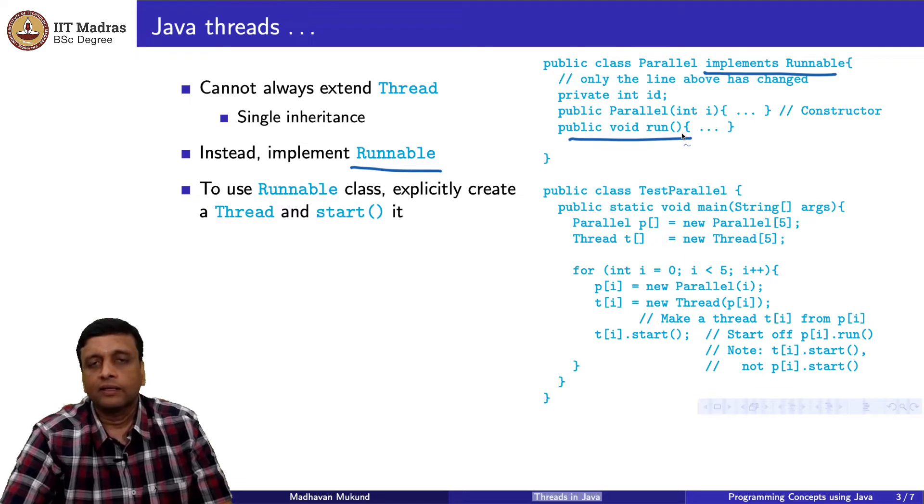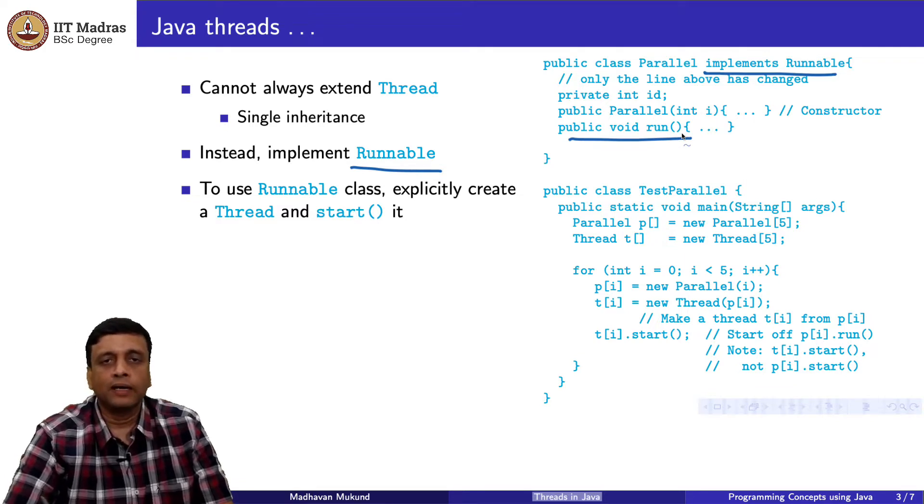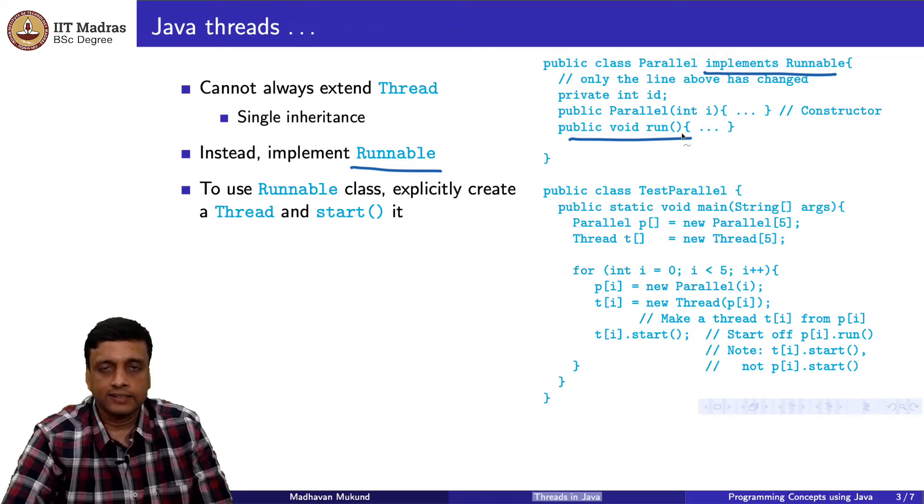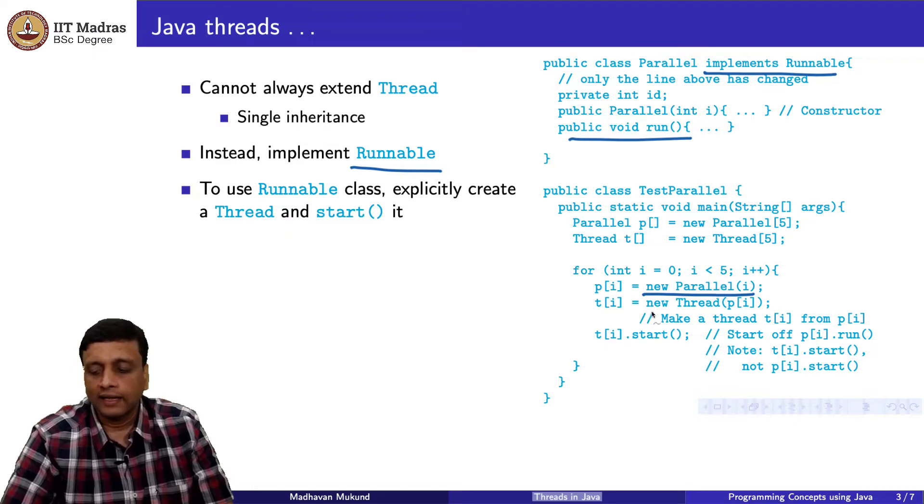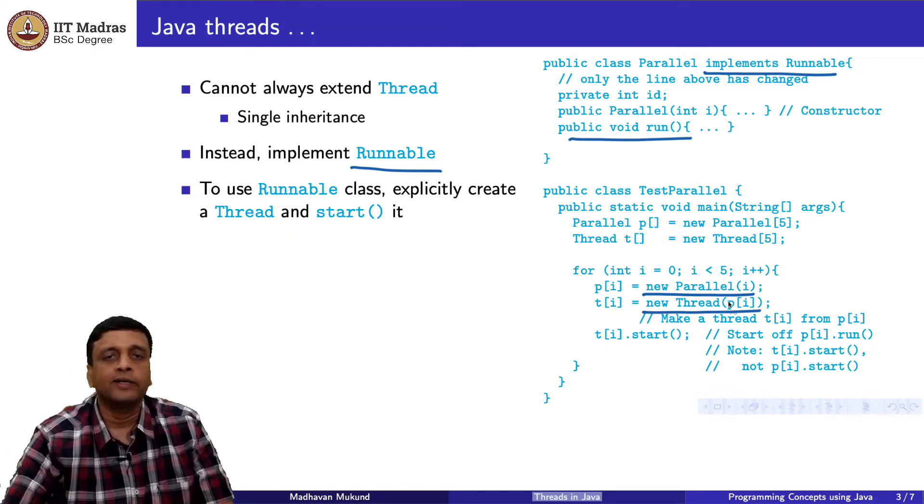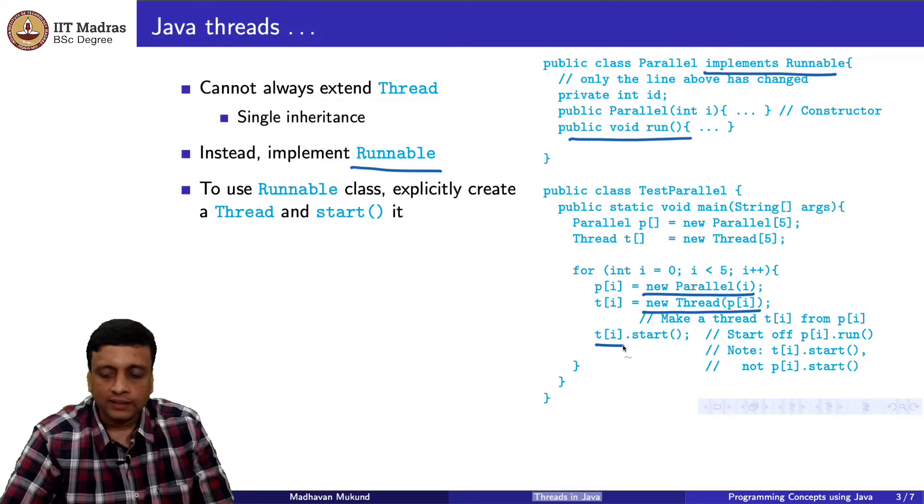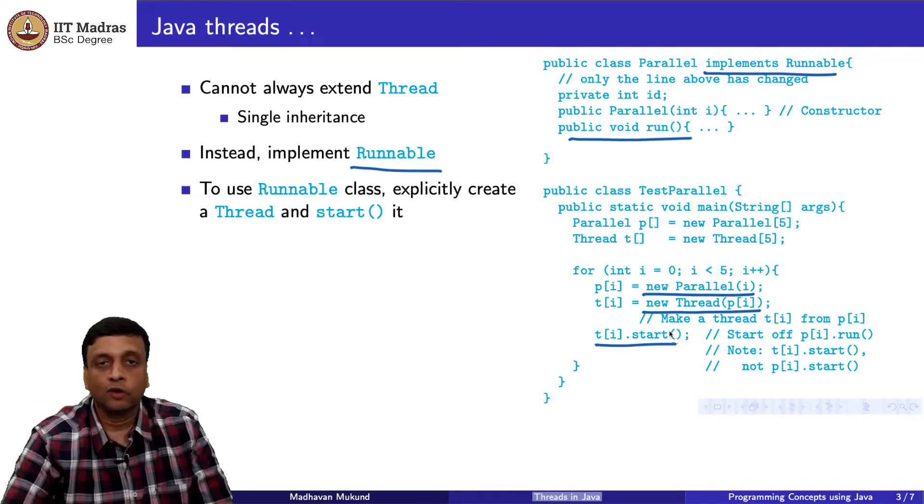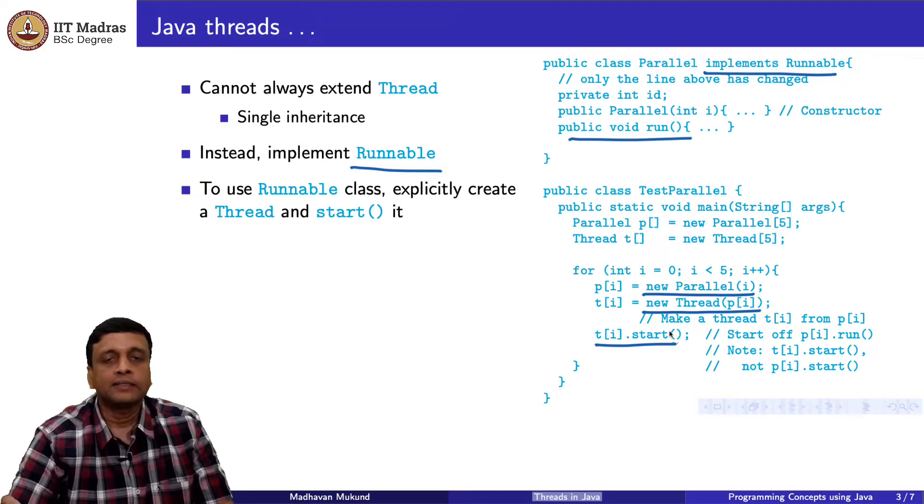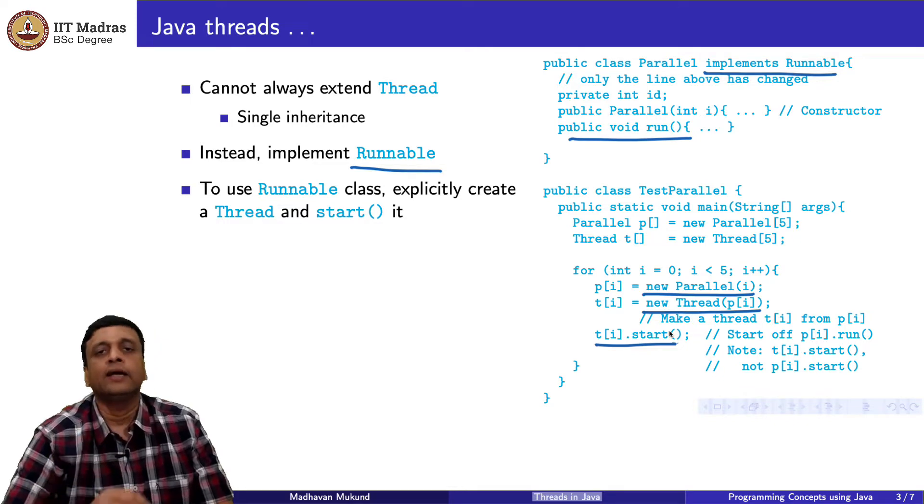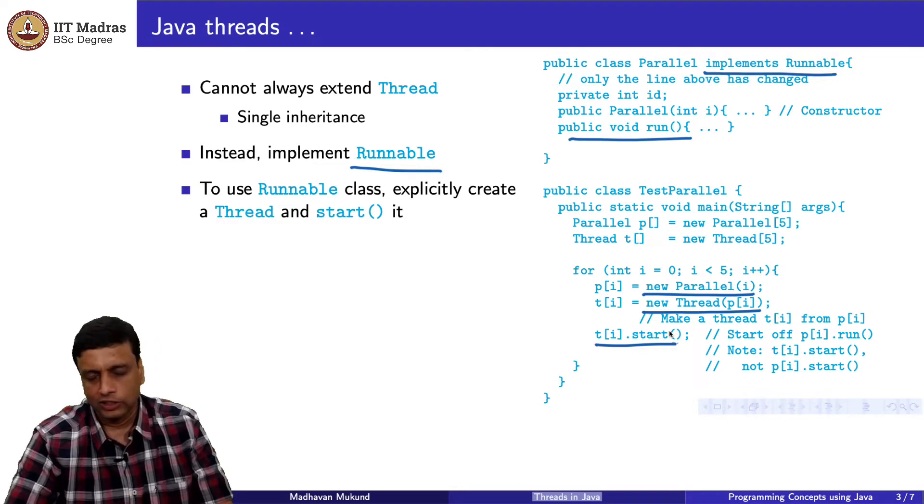But the difference is that when you are using a Runnable class rather than a Thread extended subclass, you have to create the Runnable objects and then you have to make threads out of them. Each p[i] has to be converted into a thread t[i] and you need to start the thread. You cannot start the Runnable object directly. It is again start and not run. But it is start with respect to the thread which has been created with the Runnable object.